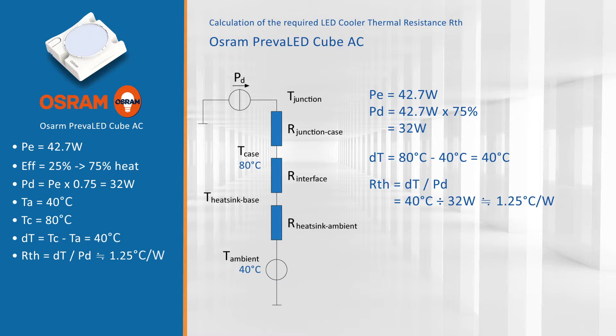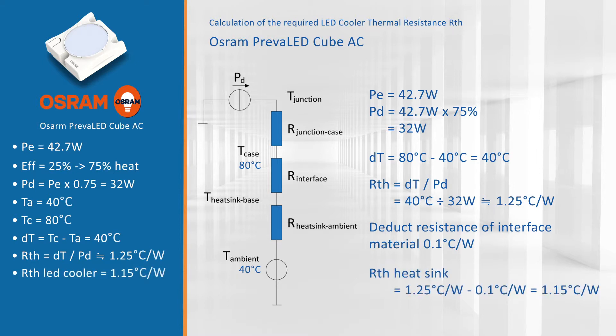From that we deduct the interface material. A good interface material is about 0.1 degrees Celsius per watt. And that gives us immediately the thermal resistance we need of our LED cooler: 1.15 degrees Celsius per watt.